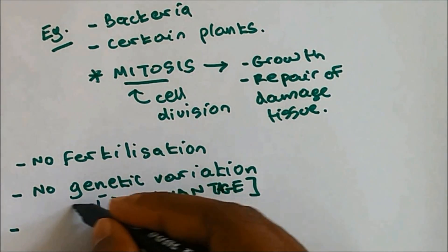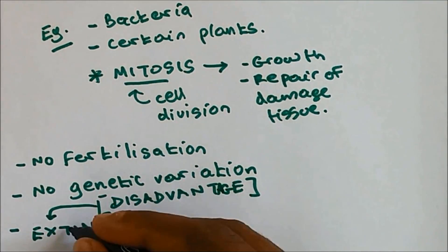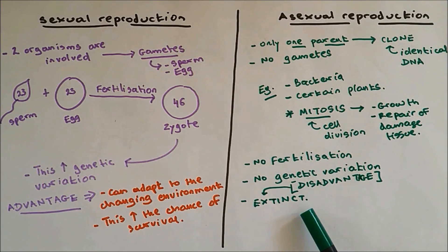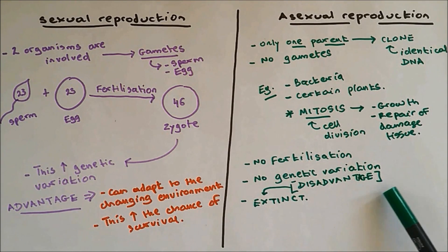And the reason why is because the species can become extinct. The reason why they can become extinct is because there is no genetic variation. If there is no genetic variation, they cannot adapt to the changing environment, so the population decreases and they will eventually become extinct.